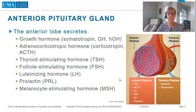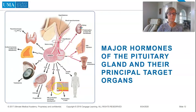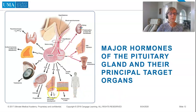In this graphic you can see the anterior pituitary and the posterior pituitary, and the major hormones of the pituitary gland and their principal target organs — showing how all these organs are regulated by the pituitary gland.